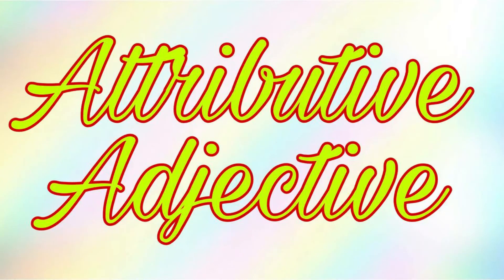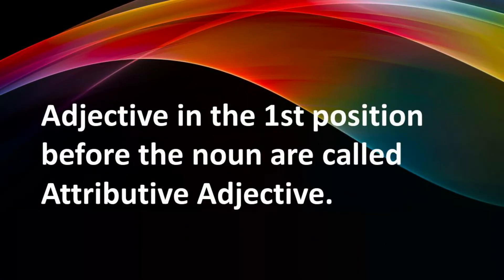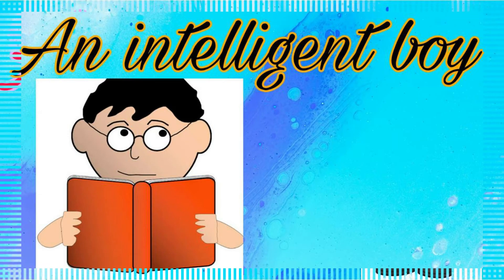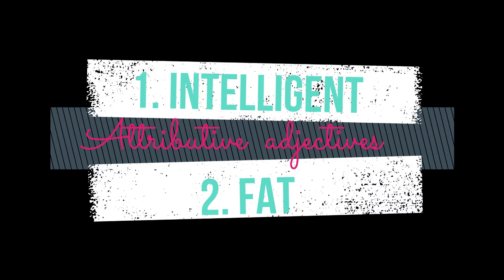What are attributive adjectives? Adjectives in the first position before the noun are called attributive adjectives. For example: 'An intelligent boy.' 'A fat man.' Here, the words intelligent and fat come before the noun — that is, boy and man. So these words signify the attributive adjectives.